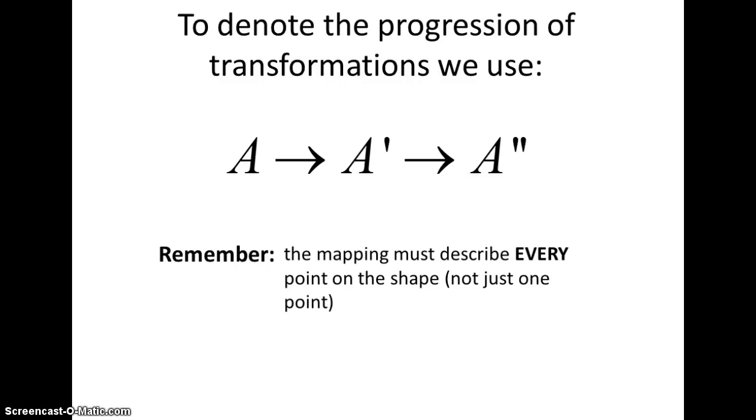So to show the progress of where we start to where we're going, we're going to label the vertices of our shape. The pre-image or the original shape, we're going to label the vertex as A. In the following transformation, we'll label the same vertex A prime, and the next transformation, we'll label the vertex as A double prime, and so on so you can see where you're going. Remember that when you're mapping something, your notation has to describe every point on the shape, not just A to A prime.